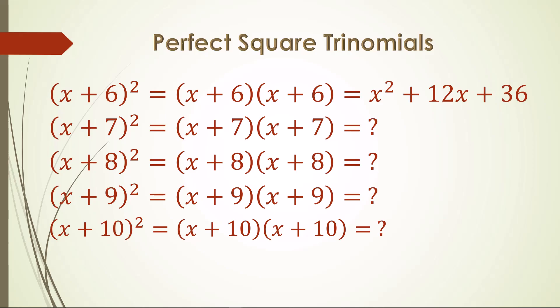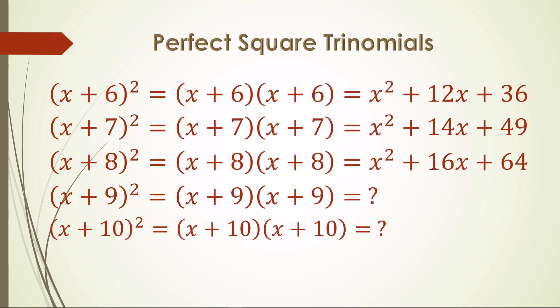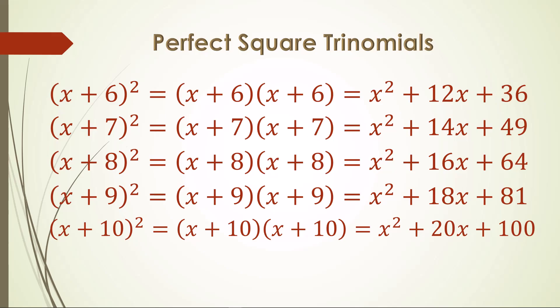The second and third terms for x plus 7 squared are 14x and 49. For x plus 8 squared, we get 16x and 64. For x plus 9 squared, the result is 18x for the middle term, twice 9, and 81 for the third term, 9 squared. And finally, x plus 10 squared doubles the 10 to get 20x for the middle term and 10 squared, or 100, for the final term.